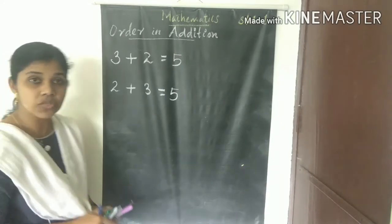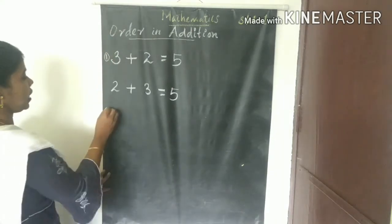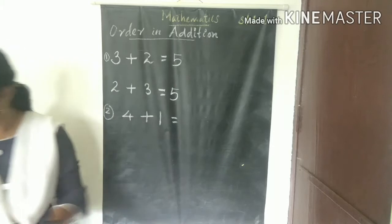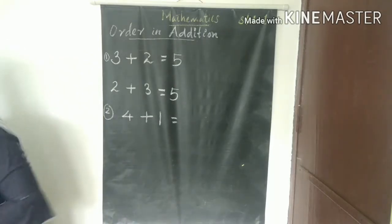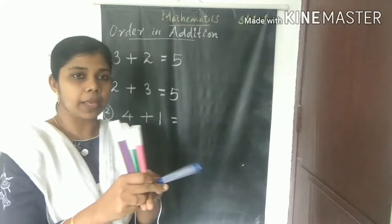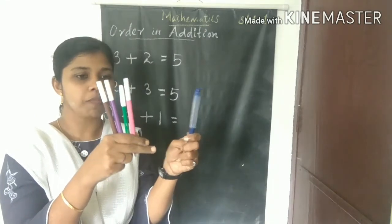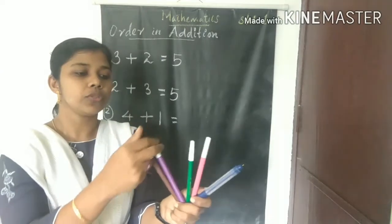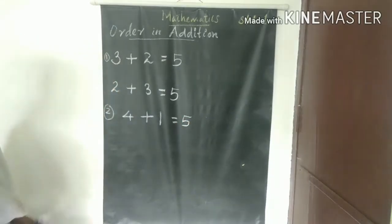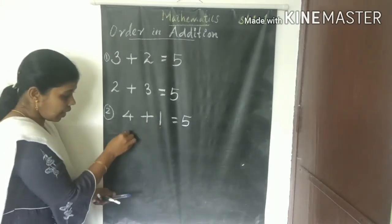Taken together and counted: one, two, three, four, five — answer is five. The answer is the same! Now the second example: four plus one. I take four pens in my right hand and one pen in my left hand. Four plus one is equal to five. Count: one, two, three, four, five — answer is five.